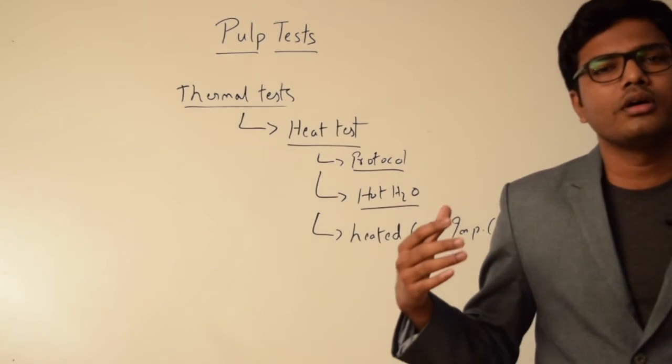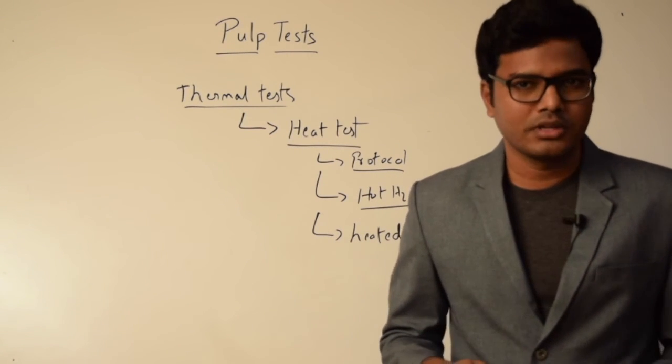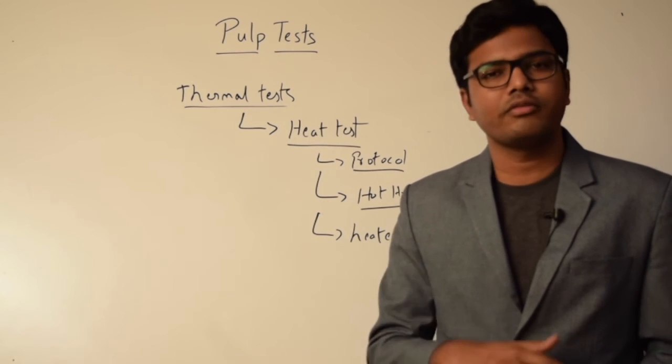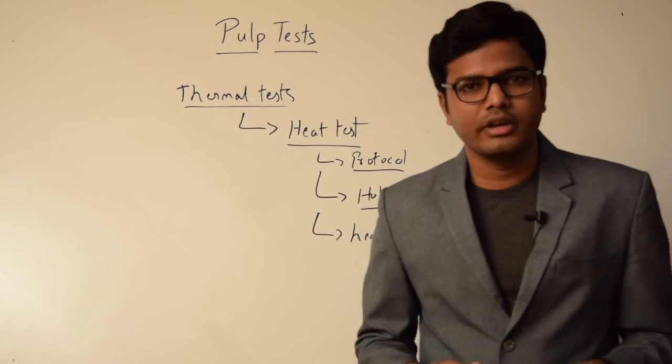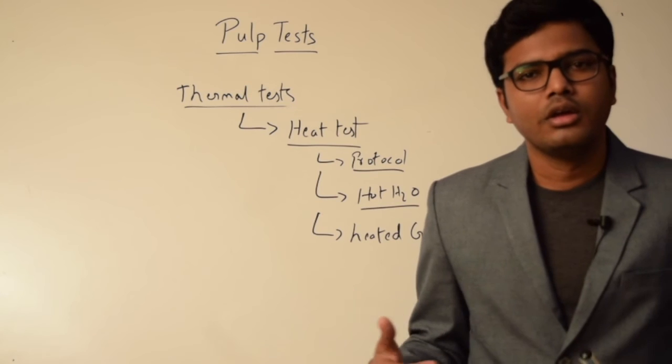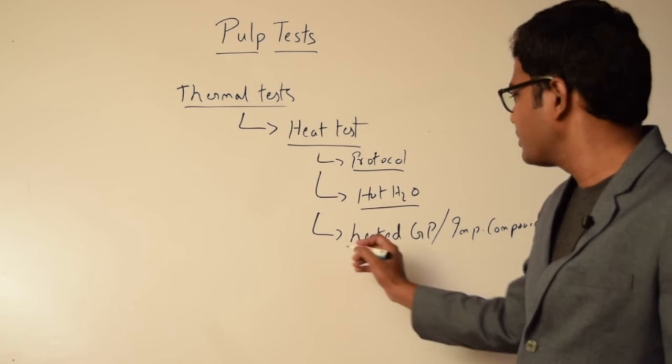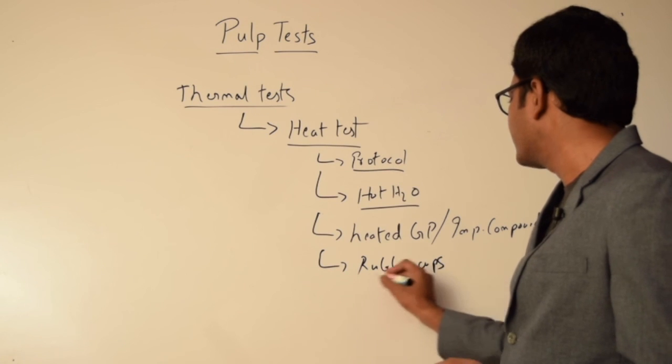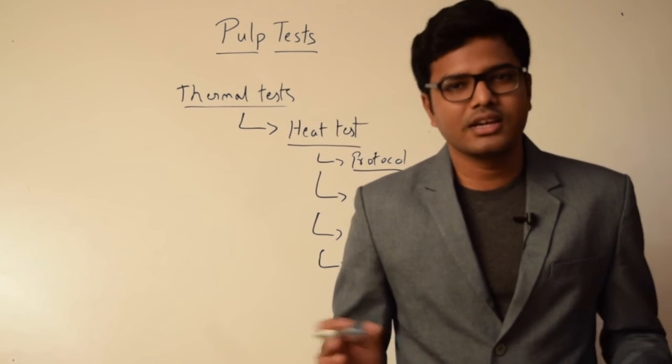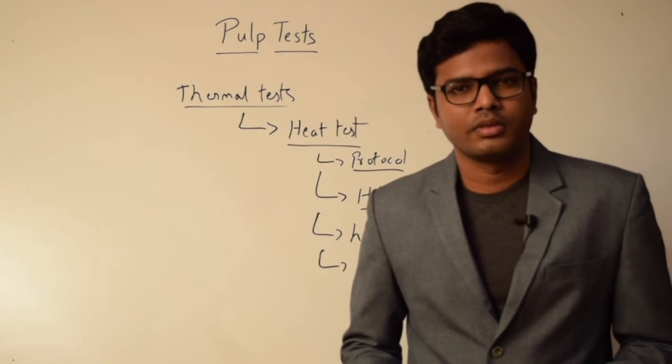Then we have frictional heat, wherein we can create frictional heat using rubber polishing cups. Rubber polishing cups rotated at very high speed in dry conditions on a dry tooth generate friction leading to generation of heat, based on which we can gauge the response. Frictional heat generated by rubber cups is seldom used nowadays because we have other better materials to perform this heat test. So this is in brief about heat test.